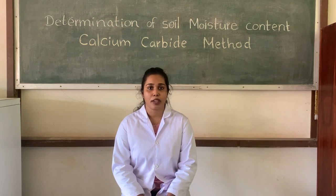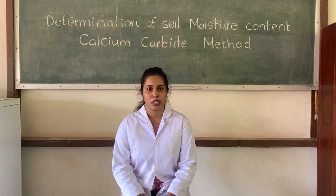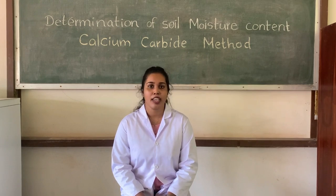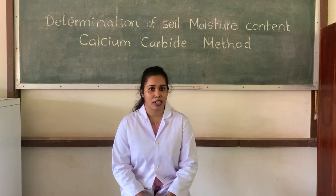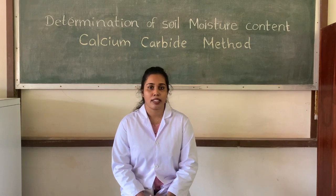This is an indirect method for soil moisture determination. The special instrument used for this experiment is called the speedy moisture meter or speedy moisture delta. This instrument consists of two major parts: a metallic pressure vessel and the gauge. The gauge is already calibrated and gives the reading of soil moisture content percentage on the wet mass basis. The fundamental working principle behind this experiment is the release of acetylene gas by the reaction between calcium carbide and the soil moisture.